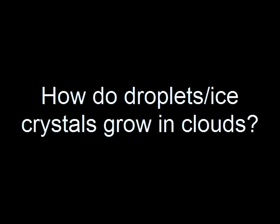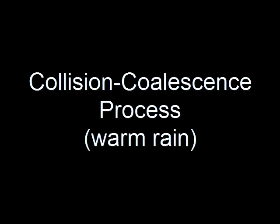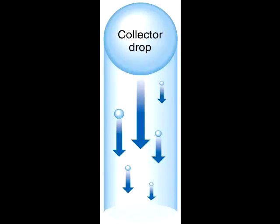Two processes can explain the growth. The growth in warm clouds is called the collision-coalescence process, which is also called the warm rain process. It happens when larger droplets fall through the cloud and collide with smaller, slower droplets. Coalescence refers to the merging of cloud droplets by collision.